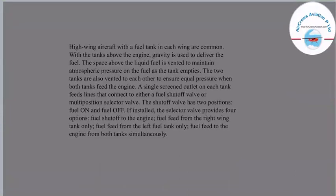High-wing aircraft with a fuel tank in each wing are common. With the tanks above the engine, gravity is used to deliver the fuel. The space above the liquid fuel is vented to maintain atmospheric pressure on the fuel as the tank empties. The two tanks are vented to each other to ensure equal pressure. A single screened outlet on each tank feeds a line connected to either a fuel shutoff valve or multi-position selector valve. The selector valve provides four options: fuel shutoff, fuel feed from the right wing tank only, fuel feed from the left tank only, or fuel feed from both tanks simultaneously.